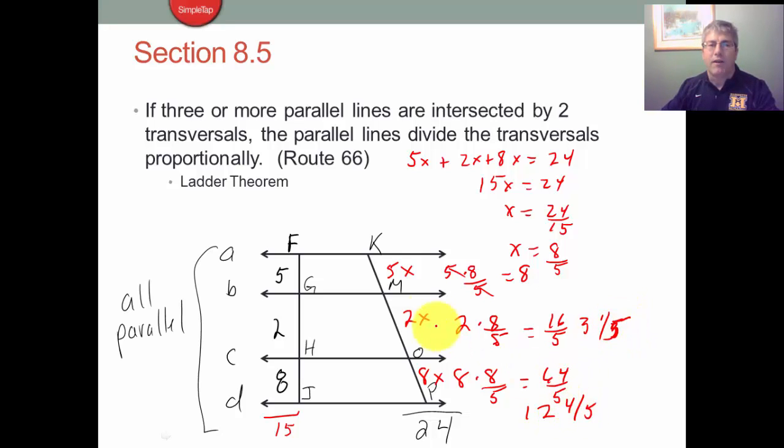And 12 and 4 fifths, so that makes up our entire side. So that is another way to do that. That's kind of a constant of proportionality here, this 8 fifths. So that is the Route 66. Parallel lines divide these two, KP and FJ, proportionally.